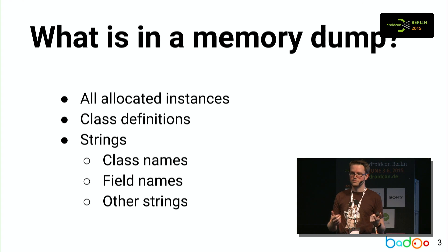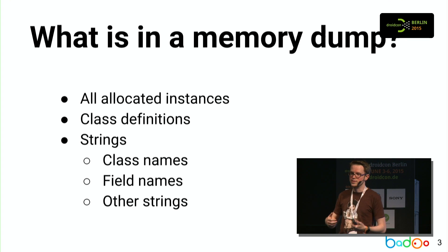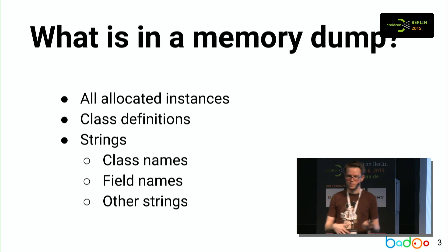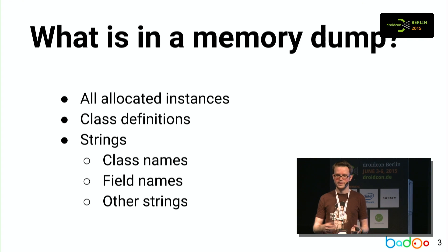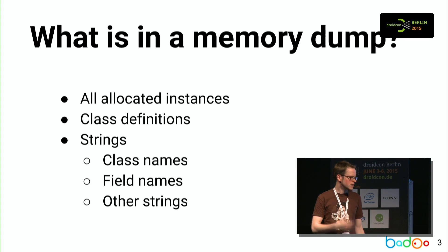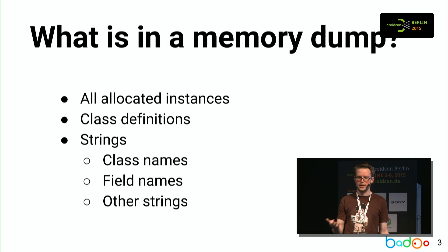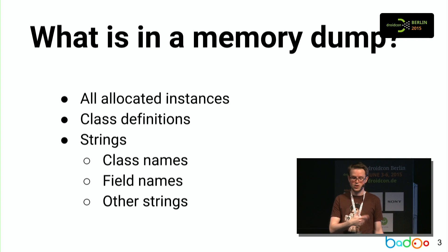The third thing is strings. The strings you need to make sense of the memory dump at all. Basically the strings will tell you what are the names of the classes, what are the names of fields, and so on. Of course you might be running obfuscation, but at least the strings identify the class. So without these three things a memory dump is pretty useless.